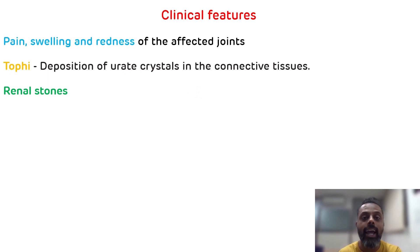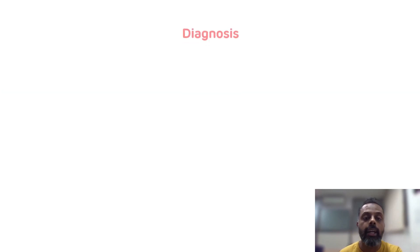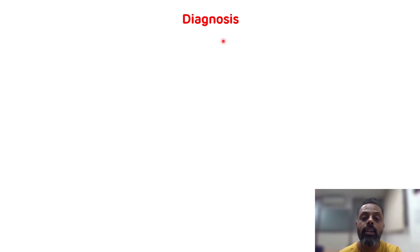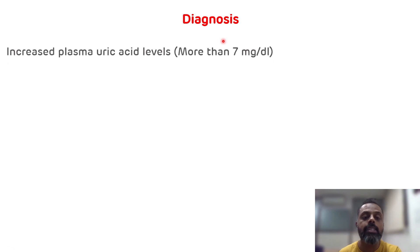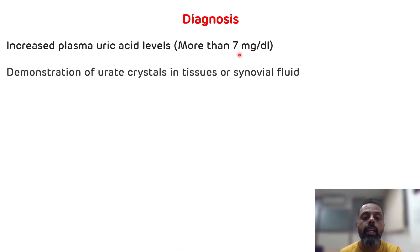Now we will see diagnosis — how you can diagnose a case of gout. Gout is characterized by hyperuricemia, that is increased uric acid production. There will be an increased plasma level of uric acid, that is greater than 7 milligrams per deciliter. The normal level is 3 to 7 milligrams per deciliter. Apart from this, you can also demonstrate uric acid crystals in tissues as well as in the synovial fluid. This is how you can diagnose a case of gout.